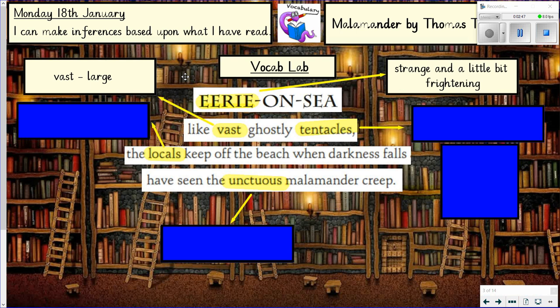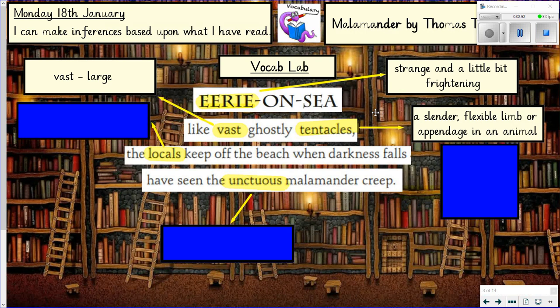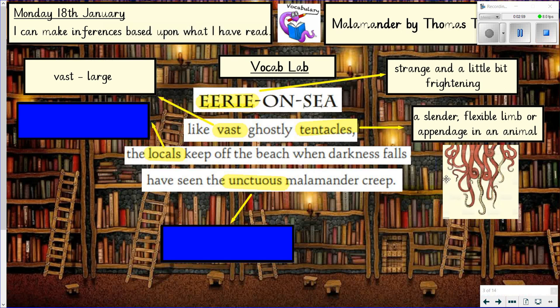So 'vast ghostly tentacles' — tentacles, in the dictionary, are a slender flexible limb or appendage in an animal. If you think of an octopus with its tentacles, that's what they are. So the phrase 'like vast ghostly tentacles' gives me this picture of big, large, ghostly — we know what ghostly means — tentacles. I can start to create that image in my own head.